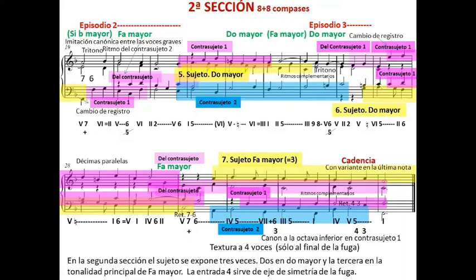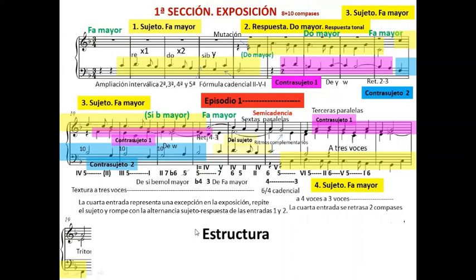A medida que avanza la primera mitad del siglo XVIII puede haber un gran contraste entre episodios y entradas de sujeto o respuesta. A nivel estructural, para comprender la estructura de una fuga hay que entender que las fugas barrocas suelen ser homogéneas y el sujeto, su presencia y su desarrollo, unifica toda la pieza. La textura fugada genera un efecto monotemático, ya que la entrada y el silencio de las voces genera un efecto de crescendo escrito que suele combinarse con las cadencias.